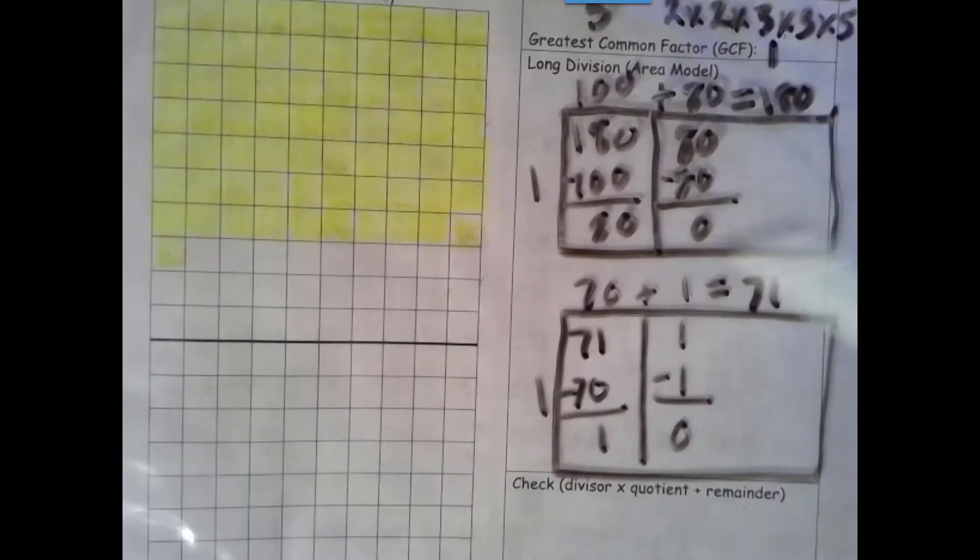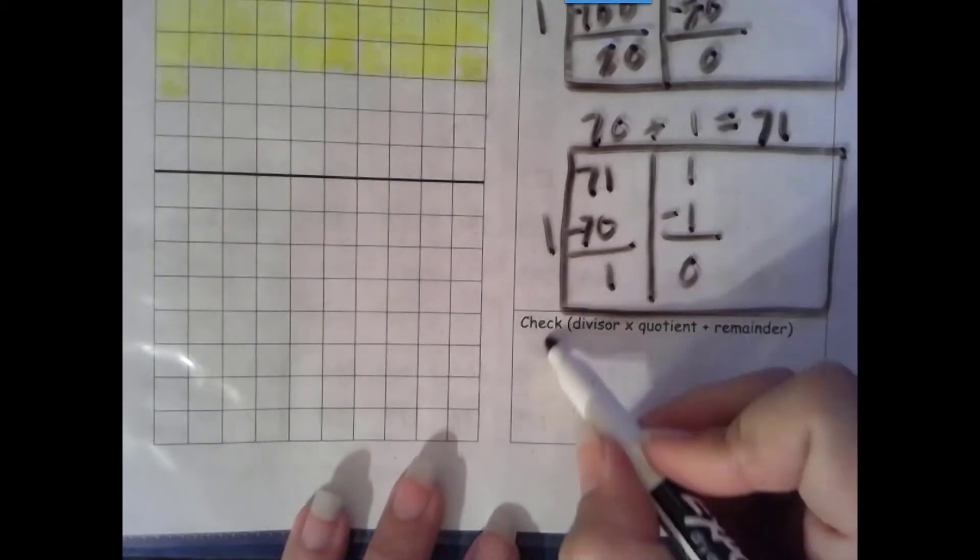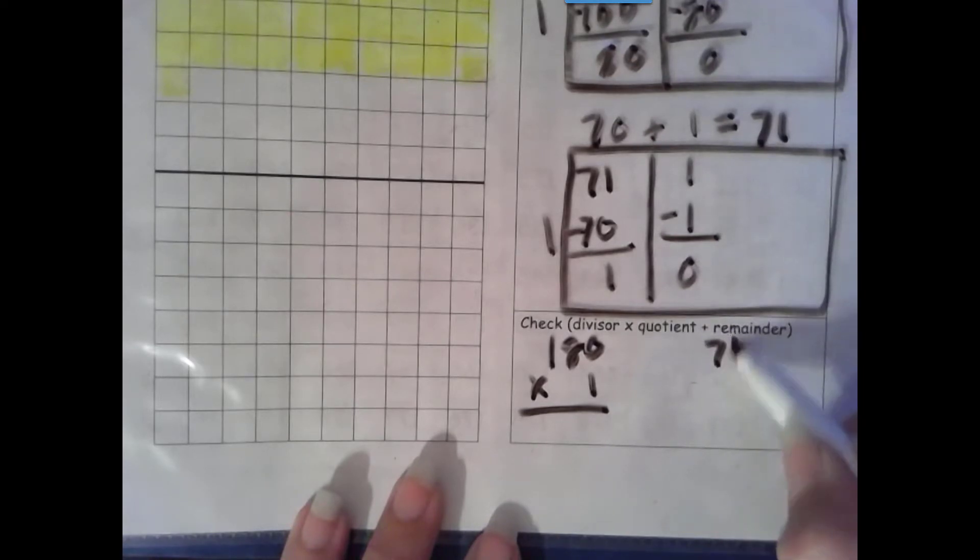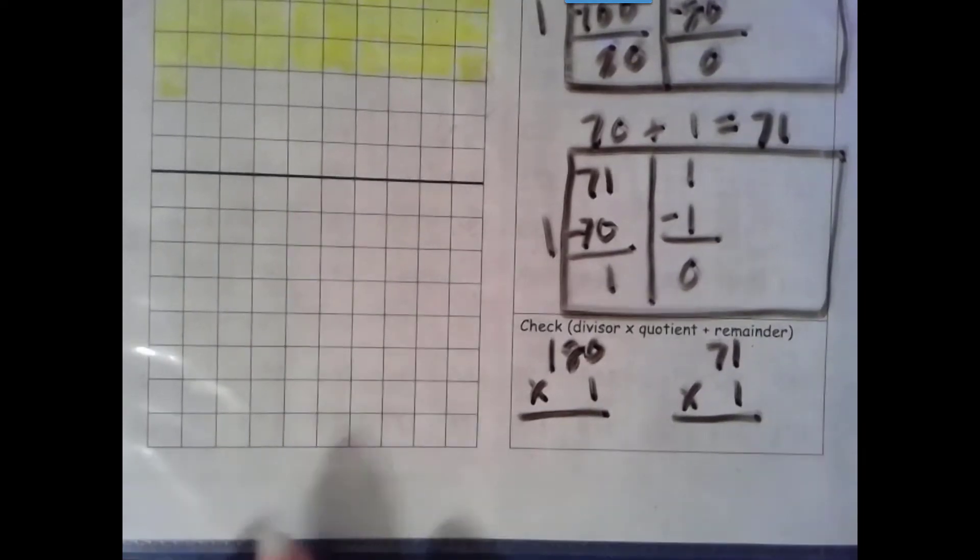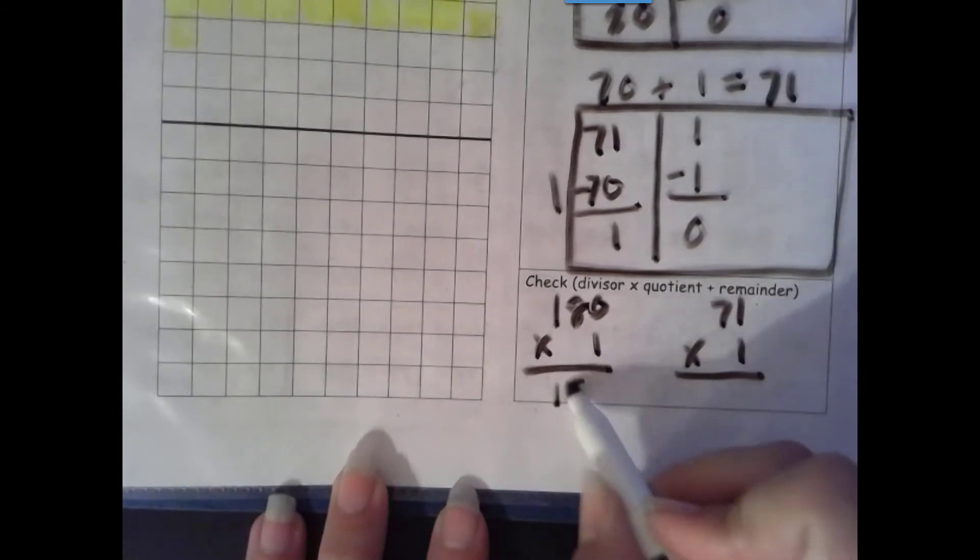We still want to check: divisor times quotient plus remainder. Now, since our remainder is 0 for both, and the identity property of addition says when you add 0 it stays the same, we don't need to add 0. But what we end up with here is multiplying by 1. That is our identity property of multiplication: when you multiply by 1, it stays the same.